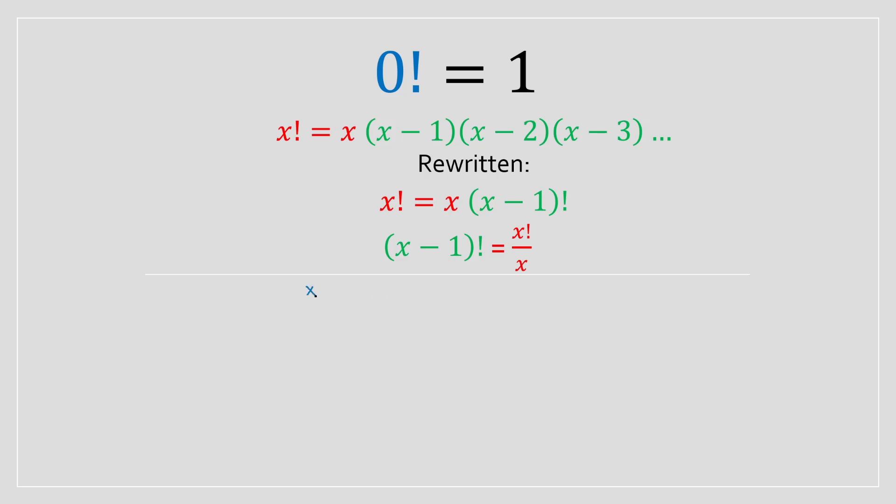Right, and if we said that x is equal to 1 in this equation, the one above, we're going to have 1 minus 1 factorial is equal to 1 factorial divided by 1.